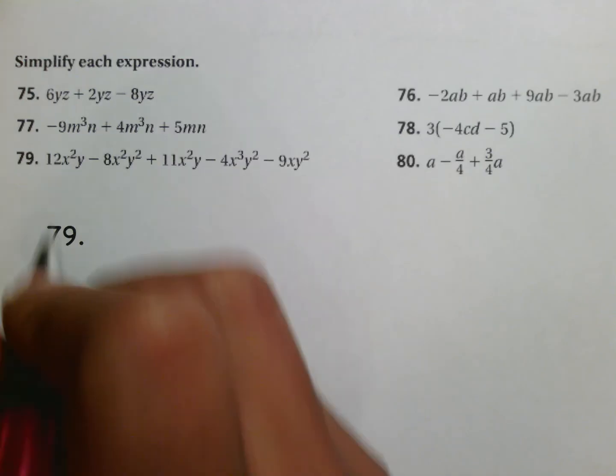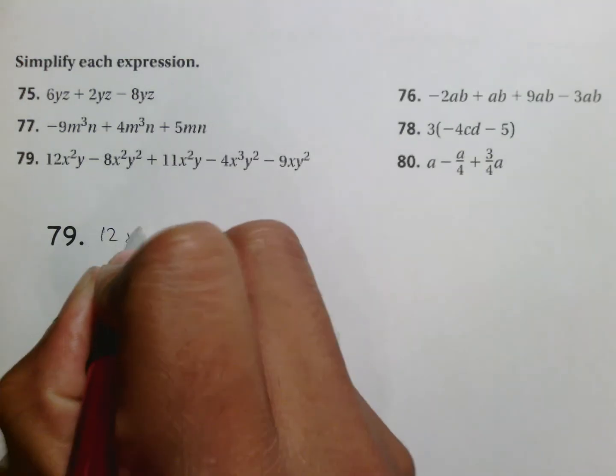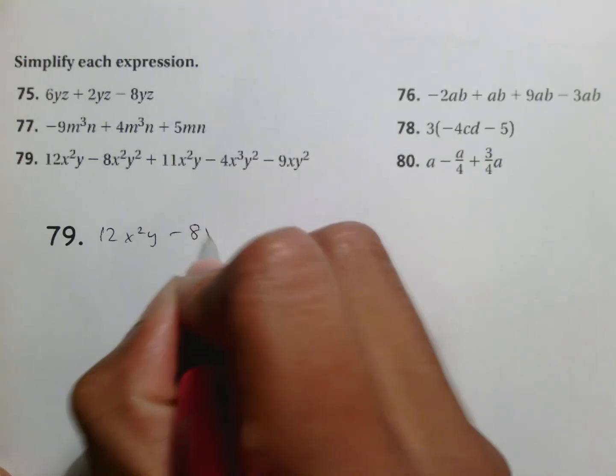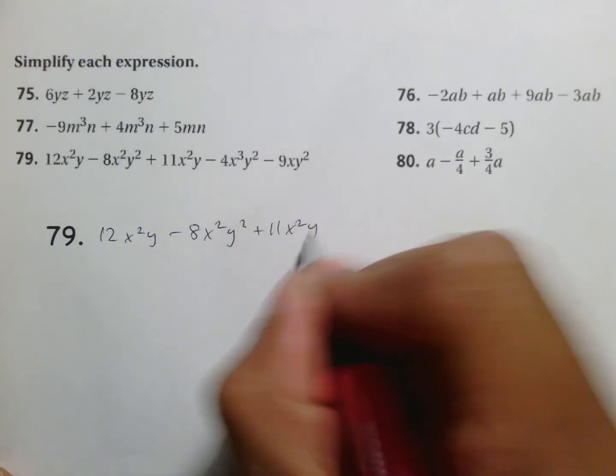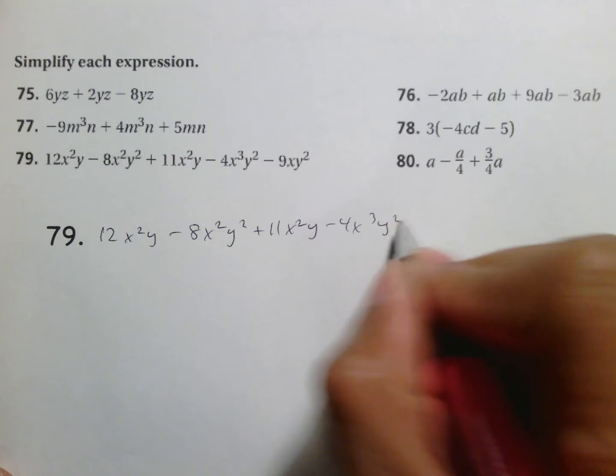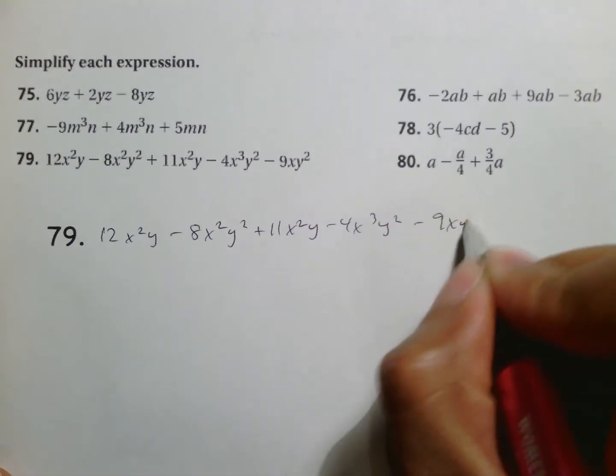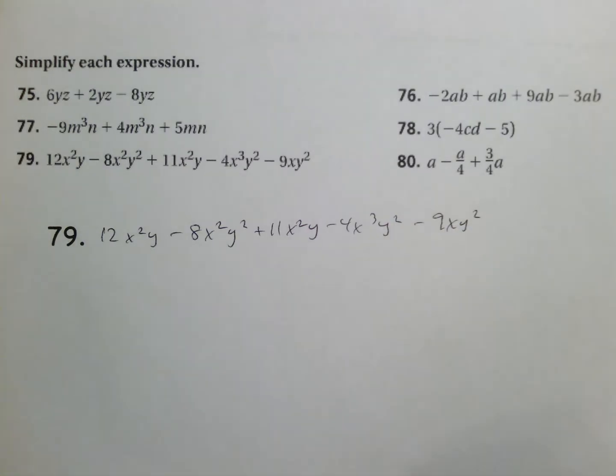79 gives us 12x²y minus 8x²y² plus 11x²y minus 4x³y² minus 9xy². This is meant to confuse you. So when you see this question don't get overwhelmed. Don't start thinking that it's a little bit too tough for your level.